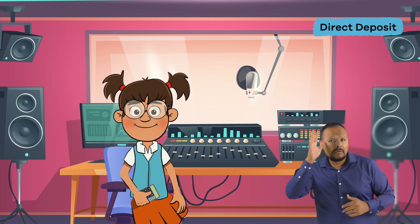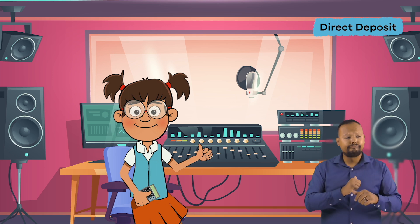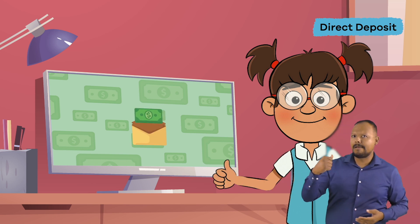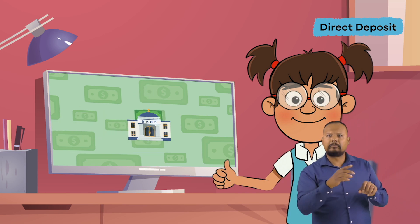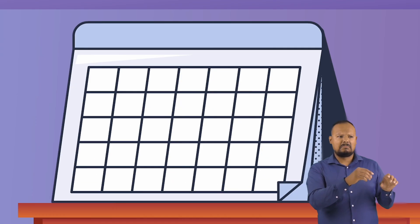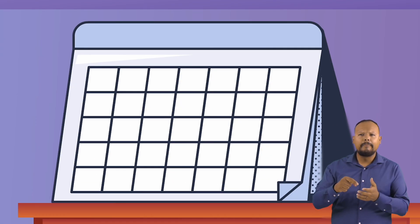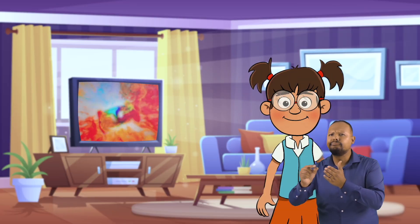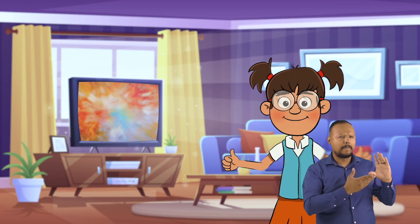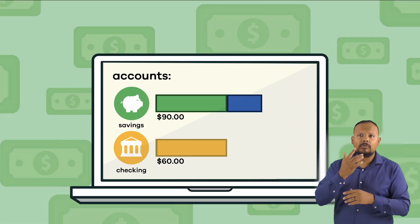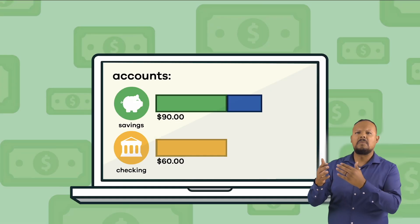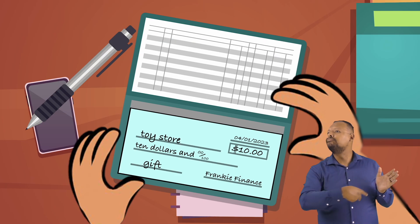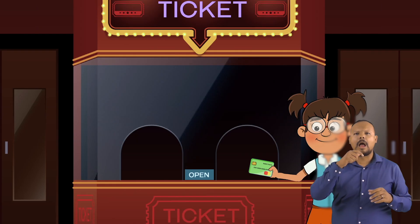When you are old enough to have a job, you will get paid. The company you work for might use Direct Deposit to send your paycheck right to your checking account. You can pay bills this way too — you can set up automatic payments for specific services, like your favorite streaming service, for example. When you set up payments this way, the money comes directly out of your checking account, and you don't have to write a check or use a debit card.